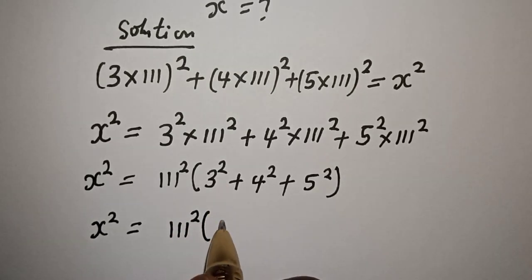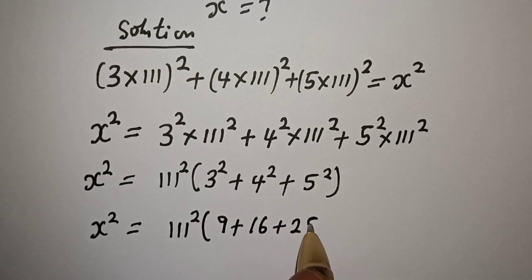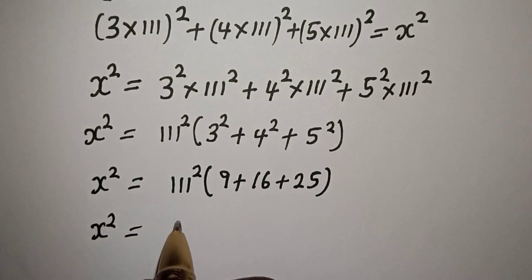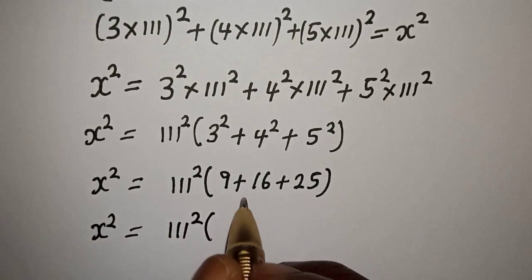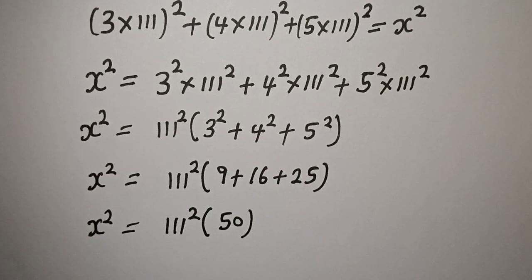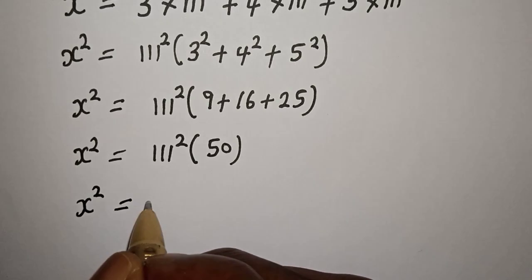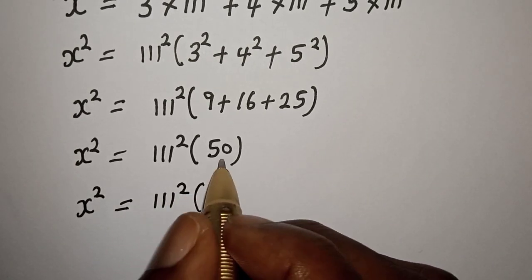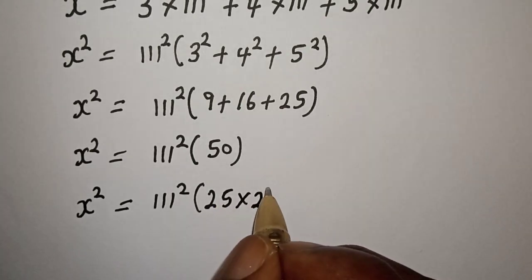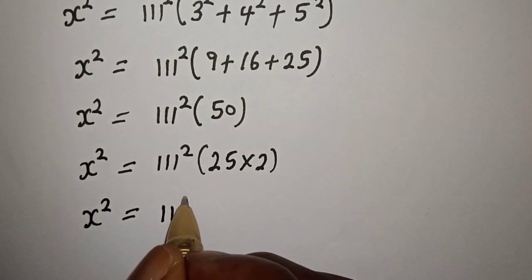s squared is equal to 111 squared bracket: 3 squared is 9, plus 4 squared is 16, plus 5 squared is 25. s squared is equal to 111 squared bracket 9 plus 16 plus 25. This is 50, which is 25 multiplied by 2. So s squared is equal to 111 squared multiplied by 50.